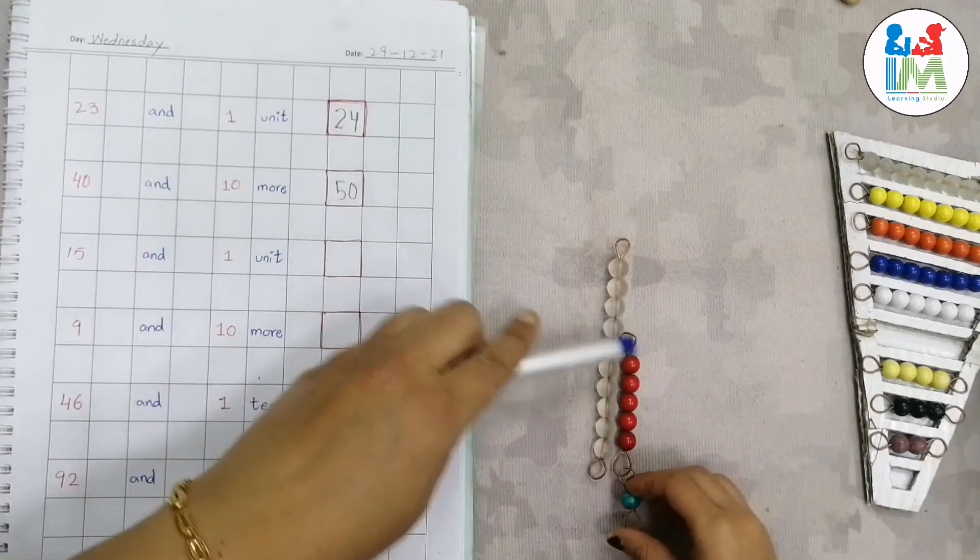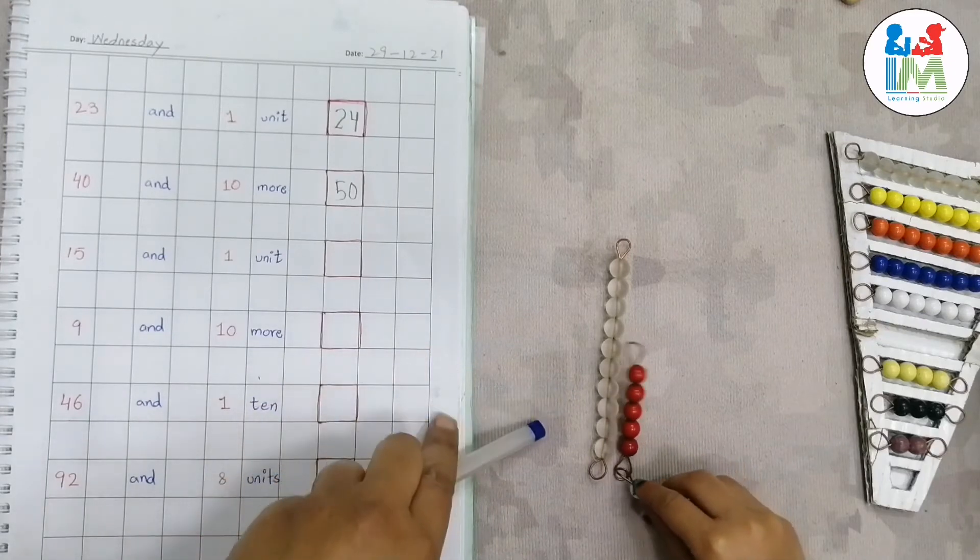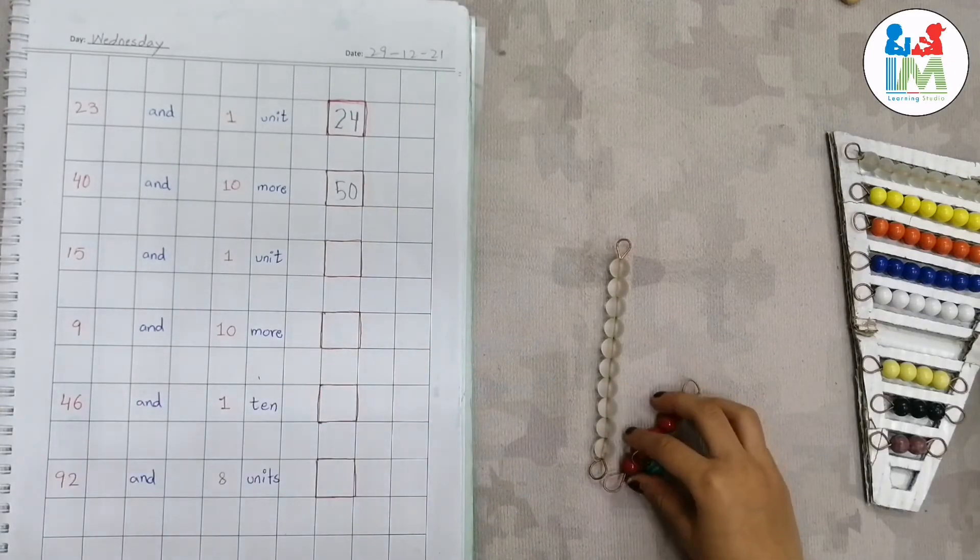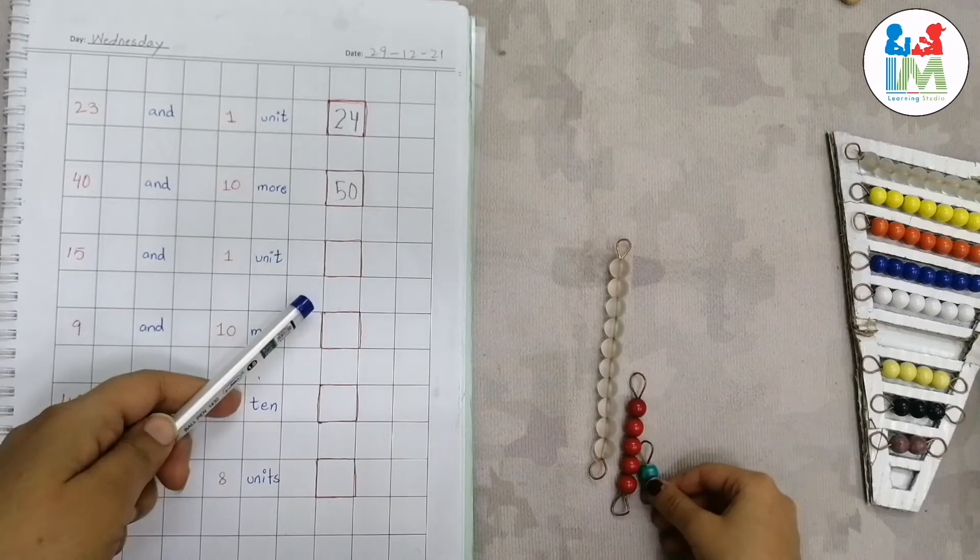One ten and six units make sixteen. Sixteen. Write here sixteen.